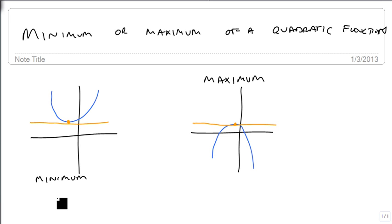This all depends on what our a value is. If a is positive, it's going up, so we have a minimum. If a is negative, it's going down, we have a maximum.